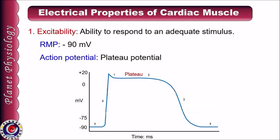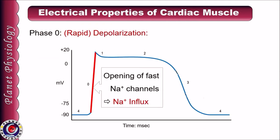Excitability means ability to respond to an adequate stimulus. Resting membrane potential of cardiac muscle is minus 90 millivolts, and the type of action potential shown by the cardiac muscle is plateau potential. As you can note in this diagram, there is a sustained depolarization between depolarization and repolarization, and hence this type of action potential is known as plateau potential. Action potential begins with the phase of rapid depolarization, known as phase 0. It is brought about by opening of fast sodium channels leading to sodium influx, which changes resting membrane potential from minus 90 millivolts to plus 20 millivolts.